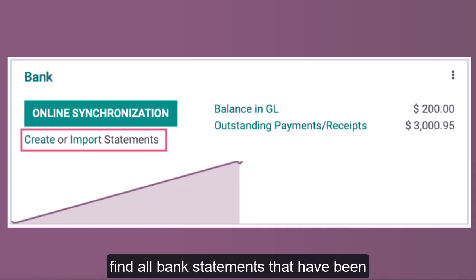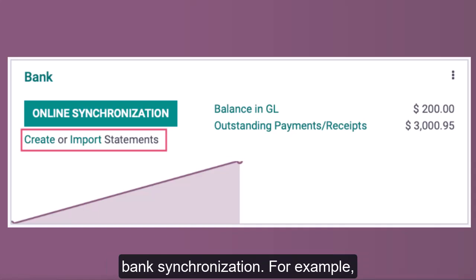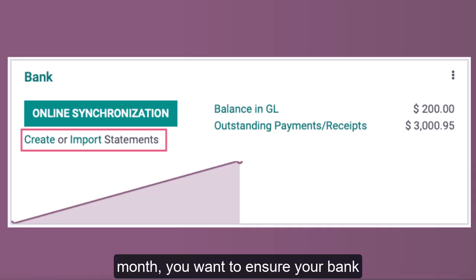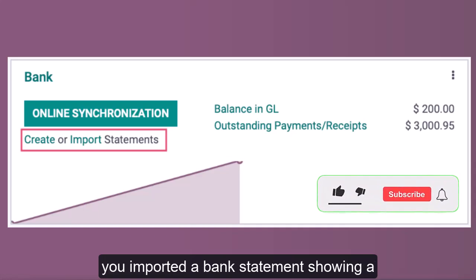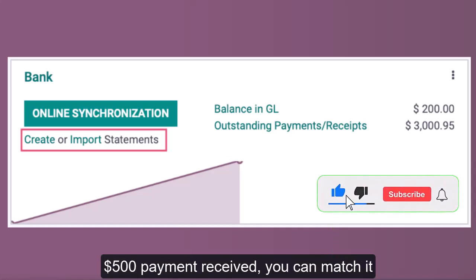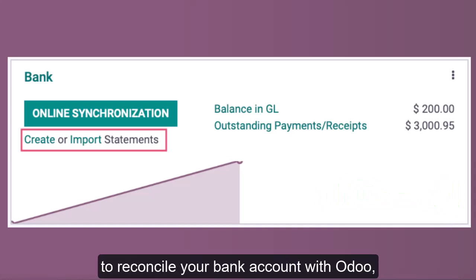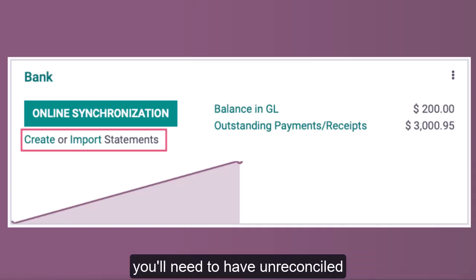Go to your Odoo dashboard and open the accounting app. To start reconciliation, navigate to statements within the journal card. Here you will find all bank statements that have been imported manually or through automatic bank synchronization. For example, imagine you own a business selling electronic gadgets. At the end of the month, you want to ensure your bank transactions match your Odoo records. If you imported a bank statement showing a $500 payment received, you can match it against an open invoice in Odoo.